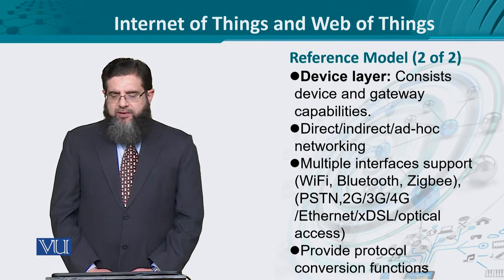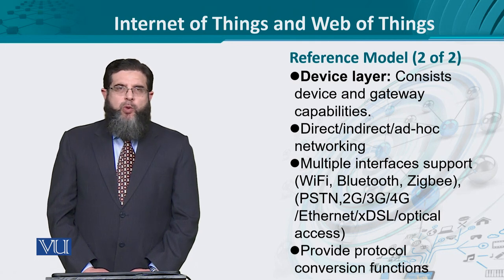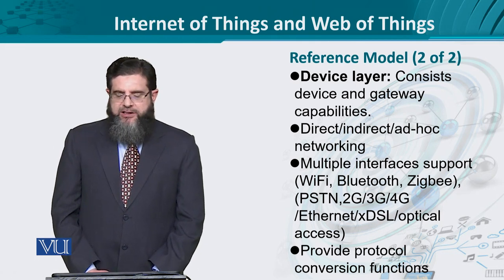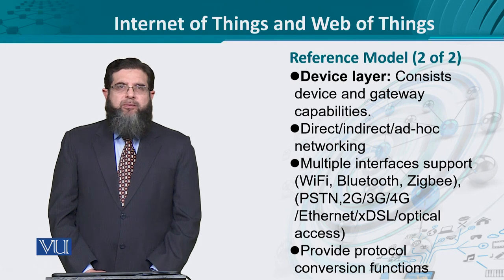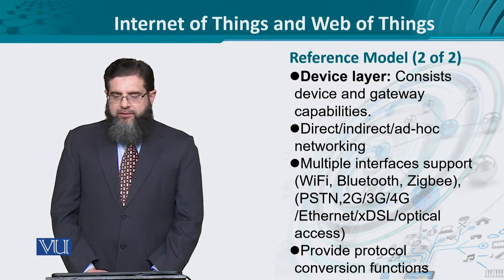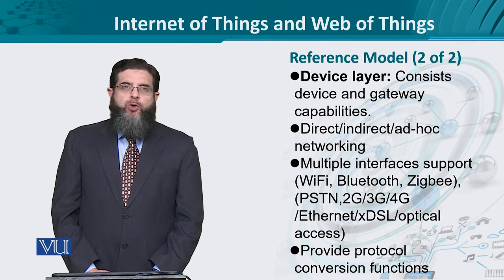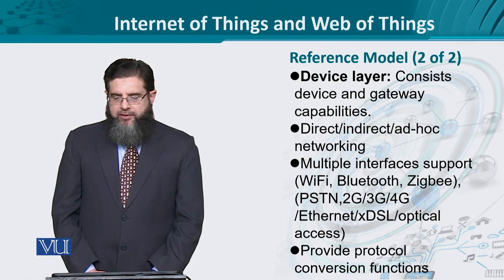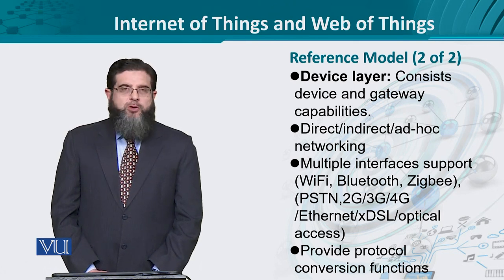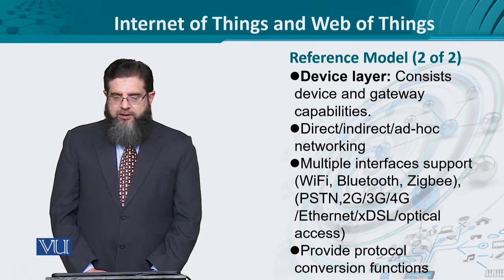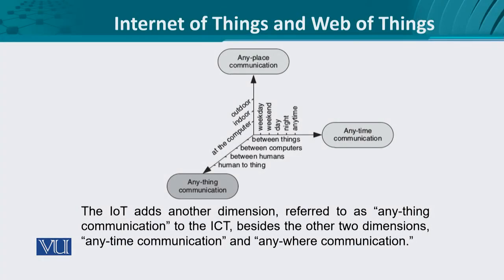Lastly, we have the device layer itself, which comprises devices and the connectivity of devices to each other and to the network through certain intermediaries known as gateways. The connectivity could be direct, indirect, or even ad hoc — that is, on the fly. The device layer also addresses support for multiple underlying technologies, each having its own exposed interface, for instance Wi-Fi, Bluetooth, etc. There are also certain interoperability requirements handled by the device layer, because sometimes devices cannot communicate to the layer above directly, so protocol conversion functions are needed.